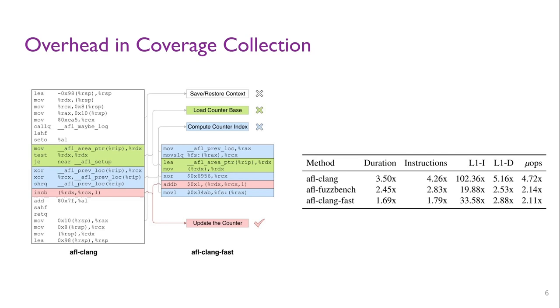It computes the counter index, updates the corresponding counter value, restores the context, and transfers control back to the program logic. The code is executed frequently and can contain dozens of instructions encoded in around 100 bytes.